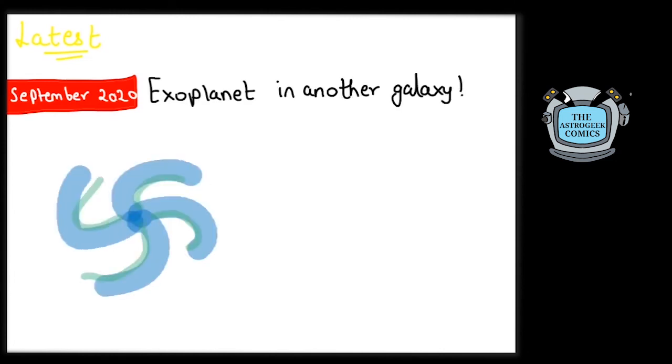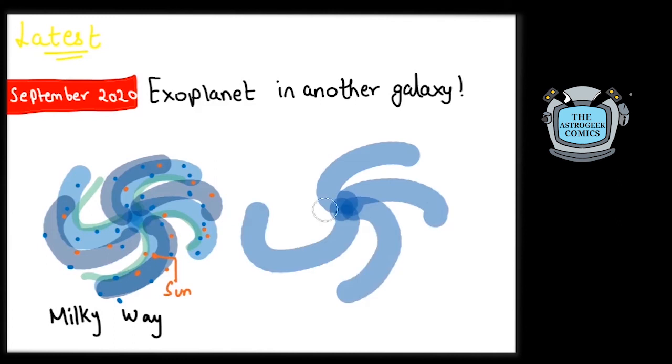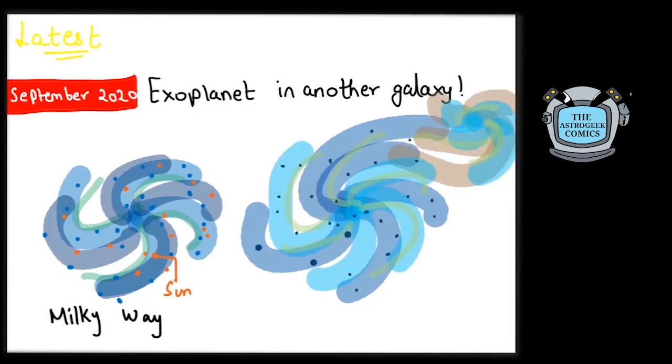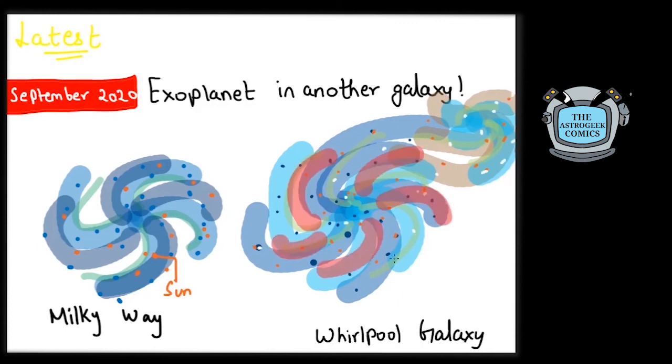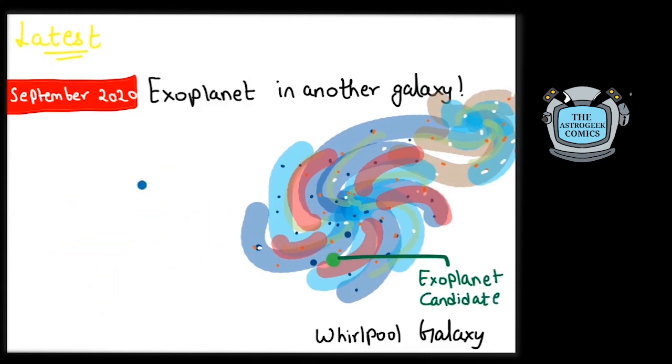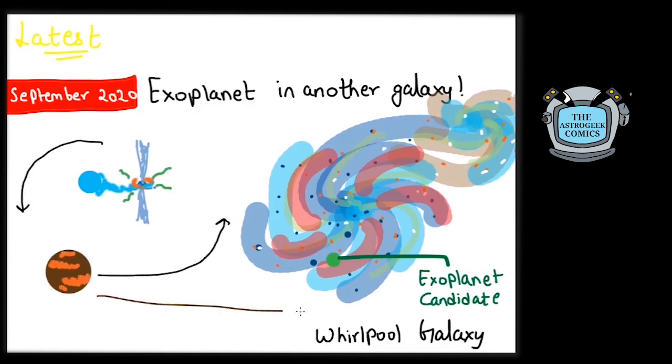All the planets we have known till now have been found within our Milky Way galaxy. But in September 2020, scientists discovered a candidate exoplanet outside the Milky Way in the whirlpool galaxy. This exoplanet has been found orbiting a binary system with a neutron star or a black hole in the center and was detected by transit method as it blocked out the radiation coming towards us while orbiting.